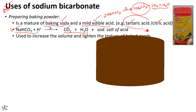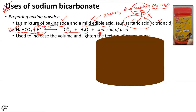The tartaric acid or any other edible acid provides H⁺ ions. This acid is going to neutralize the sodium carbonate base. If this neutralization is not done, then due to the presence of sodium carbonate, the cake or the baked product would taste bitter, having a soapy or metallic taste. Hence, when you heat baking powder, you get carbon dioxide, water, and sodium salt of acid. This sodium salt of acid comes from the neutralization reaction of tartaric acid or any mild edible acid with sodium carbonate.